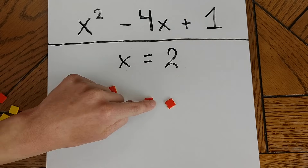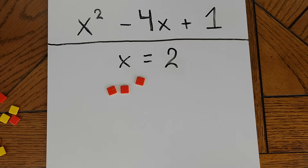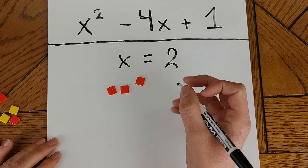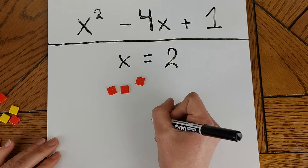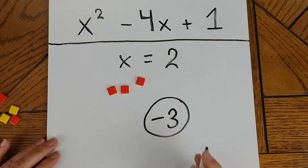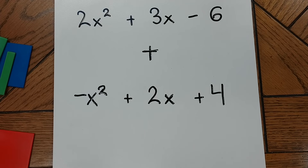That eventually leaves me with just some negative tiles. I've got negative 1, negative 2, negative 3. That means for this expression, when x equals 2, the value is negative 3. You can use algebra tiles to model the combination of like terms when adding, subtracting, or simplifying polynomials.